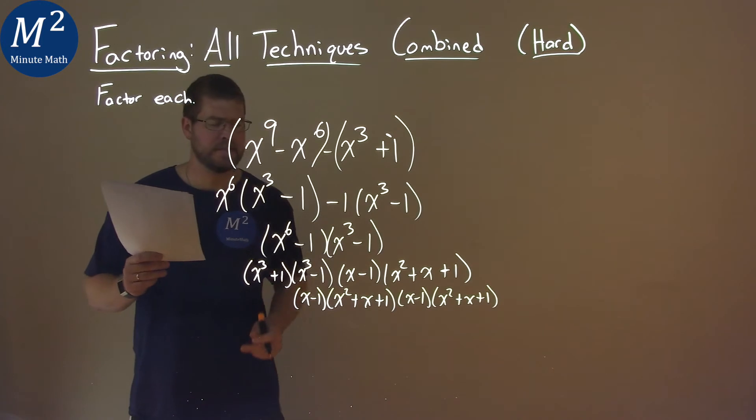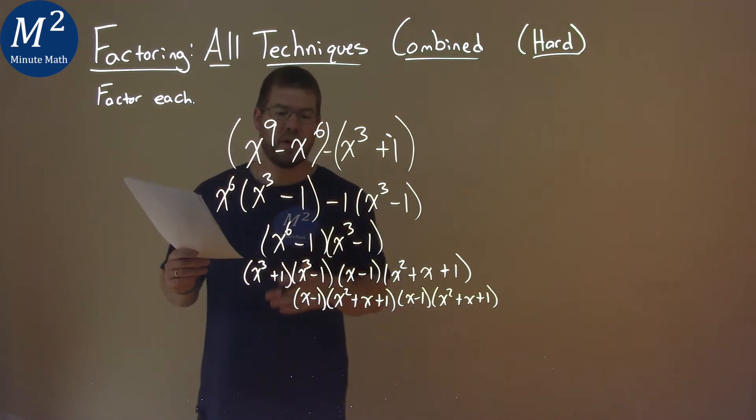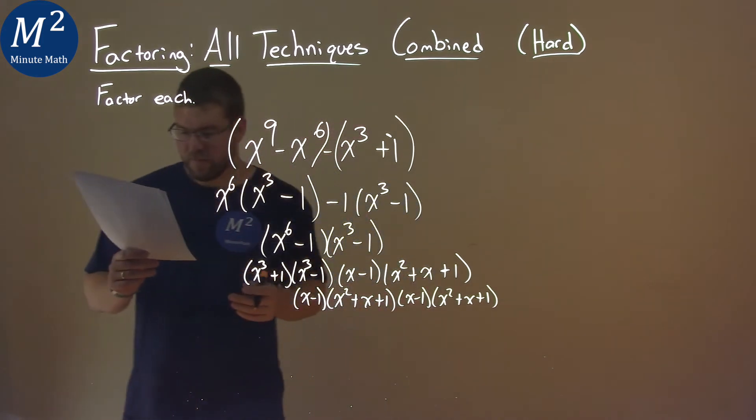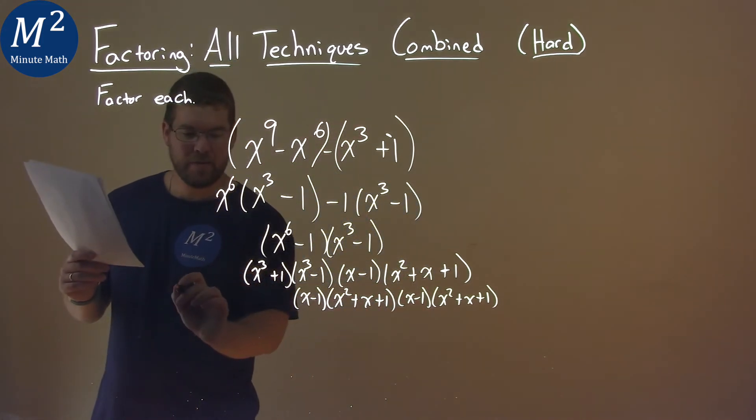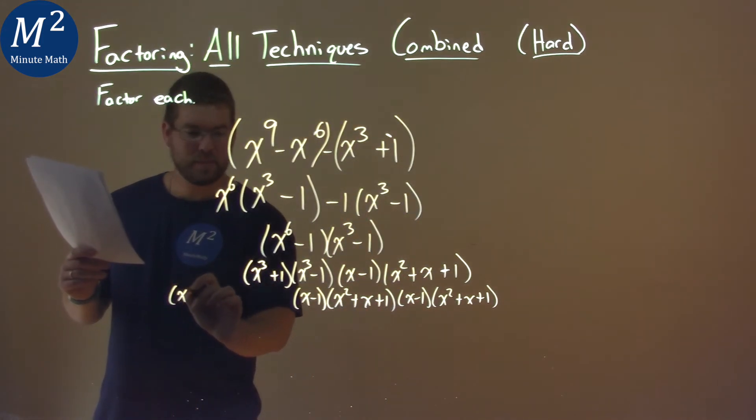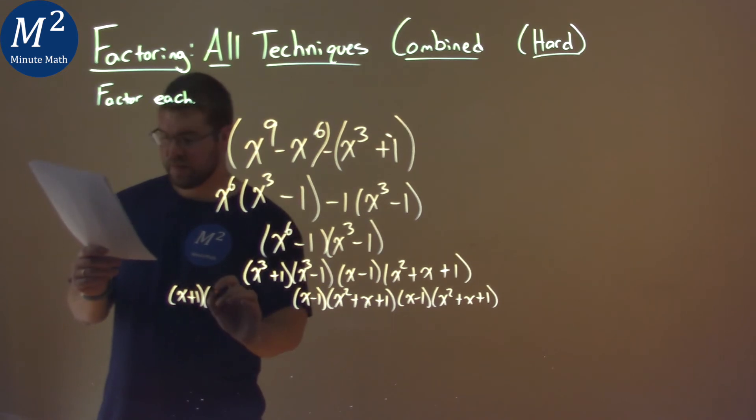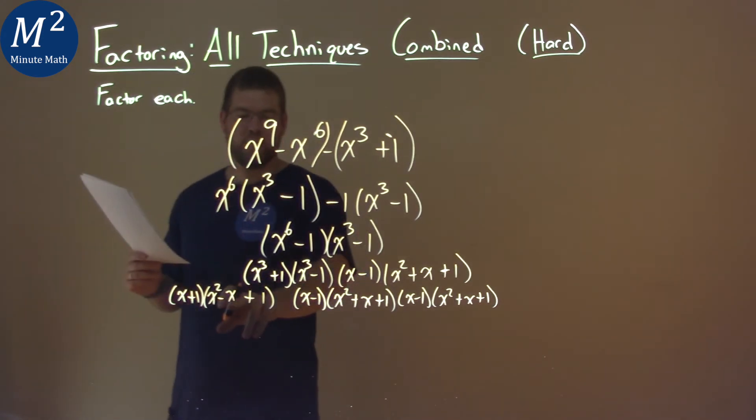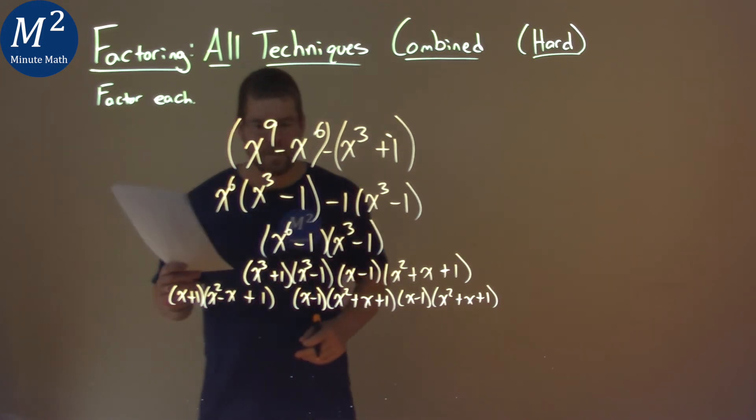But then I have another question. Isn't the x to the third plus one also the sum of cubes? Using that formula here, we have x plus one times x squared minus x and then it's plus a one. x times one would be the x and then one squared one.